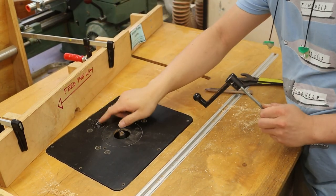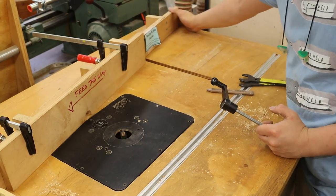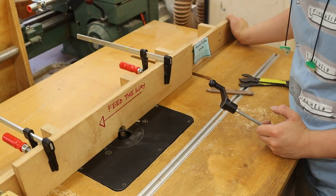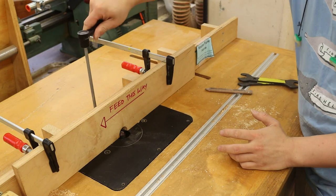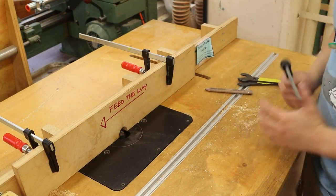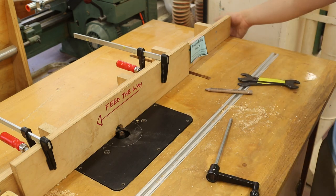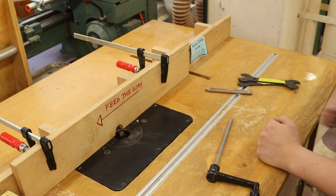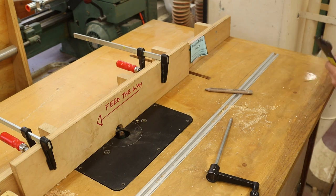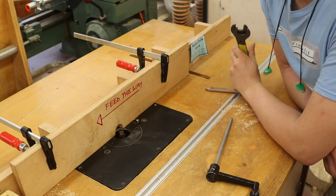And the reason why you want to do the height adjuster first is because when the fence covers over it, you may not be able to access your height adjustment. Once you've set your fence and you're ready to go, plug the machine back in and router away.